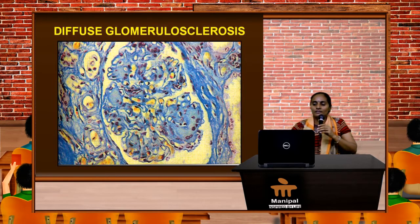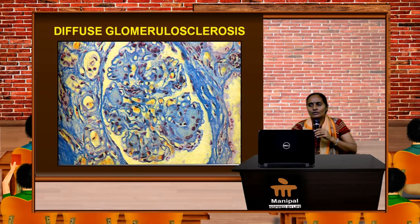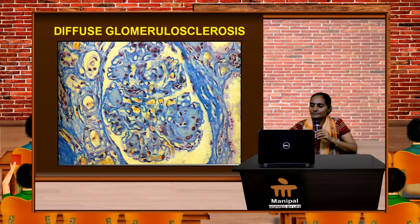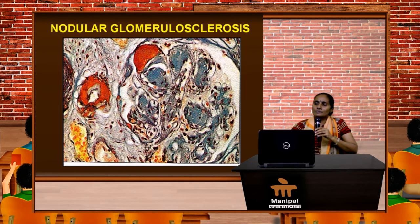Here is a picture showing much more destruction of the glomeruli — that's why it's called diffuse glomerulosclerosis. There could be nodular or diffuse forms. In end-stage renal disease, you have bilaterally contracted kidneys with this pathology of diffuse glomerulosclerosis. This picture with a different staining depicts nodular glomerulosclerosis.